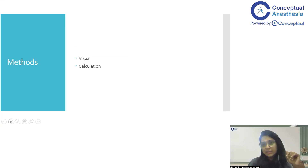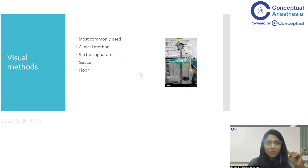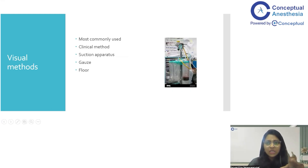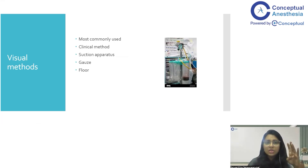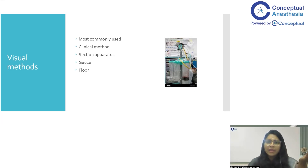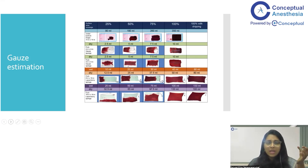The most commonly used method is the visual method — a clinical method wherein you look at all the gauzes which are soaked, what mop pads are soaked, how wet the floor is, and what is the loss in the suction apparatus. You collectively take all of these into consideration and give the total amount of blood loss. This is the most commonly used method, though it may be less accurate.